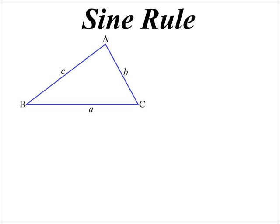So the first one we look at is the sine rule. Just to create the sine rule, what we do is we drop a perpendicular down from one of the vertices to create two right-angled triangles.